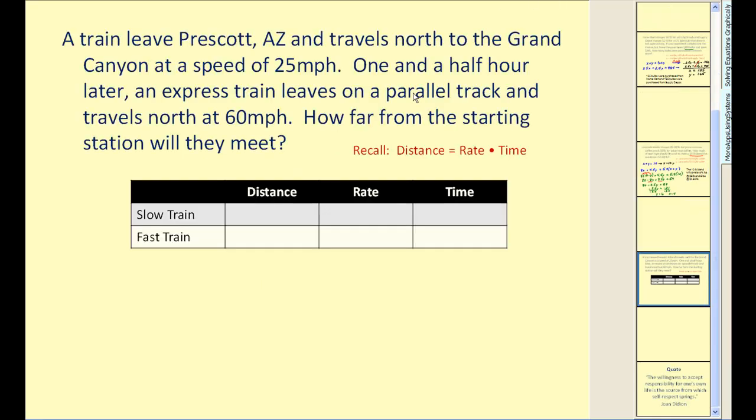Okay, we have time for one more. A train leaves Prescott, Arizona and travels north through the Grand Canyon at a speed of 25 miles per hour. One and a half hour later, an express train leaves a parallel track and travels north at 60 miles per hour. How far from the starting station will they meet? So this problem involves the formula distance equals rate times time. So let's go ahead and record what we know in a table. So the idea behind this problem is train one leaves the station traveling 25 miles per hour. And then an hour and a half later, train two leaves the same station on a parallel track. It's traveling faster. And the question is, how far from the starting point will they actually meet? Somewhere out here, they'll be in the same place at the same time.